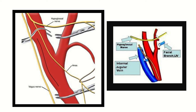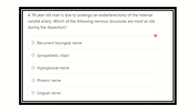Hey everyone, welcome to another question and answer session for the MRCS exam. This session will help you prepare for the MRCS exam. The question is: a 78-year-old man is due to undergo an endarterectomy of the internal carotid artery. Which of the following nervous structures are most at risk during this dissection?